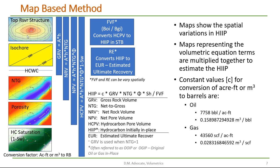We have a structure map for the top of the reservoir and an isochore — in this case a constant 100 feet thick. We know the hydrocarbon-water contact, which defines basically the gross rock volume: the area times the height. If we take a map of the net-to-gross — where this blue area is a higher net-to-gross — and we multiply that into the equation, we'll get the net reservoir volume, or net rock volume.